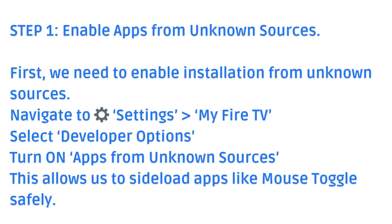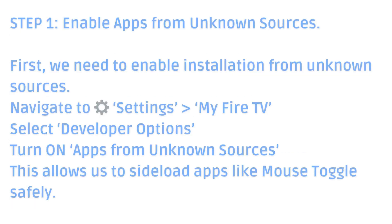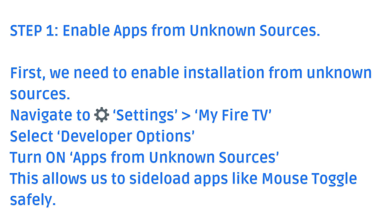Step 1: Enable apps from unknown sources. First, we need to enable installation from unknown sources. Navigate to Settings, then My Fire TV, and select Developer Options. Turn on apps from unknown sources. This allows us to sideload apps like Mouse Toggle safely.